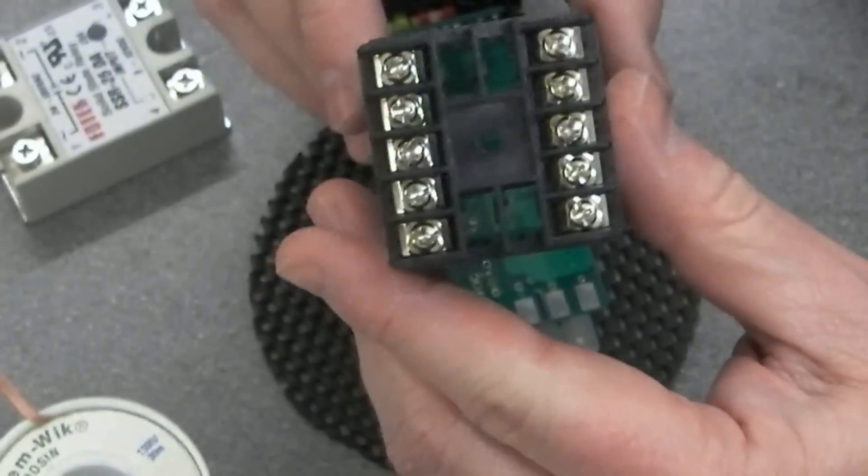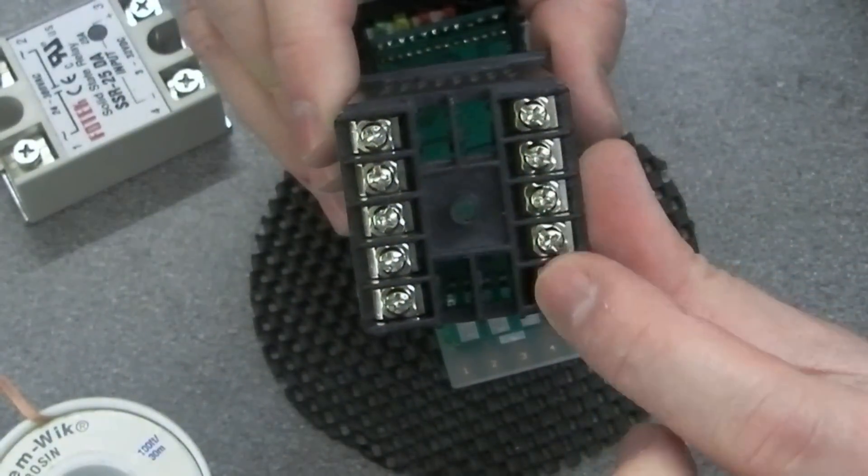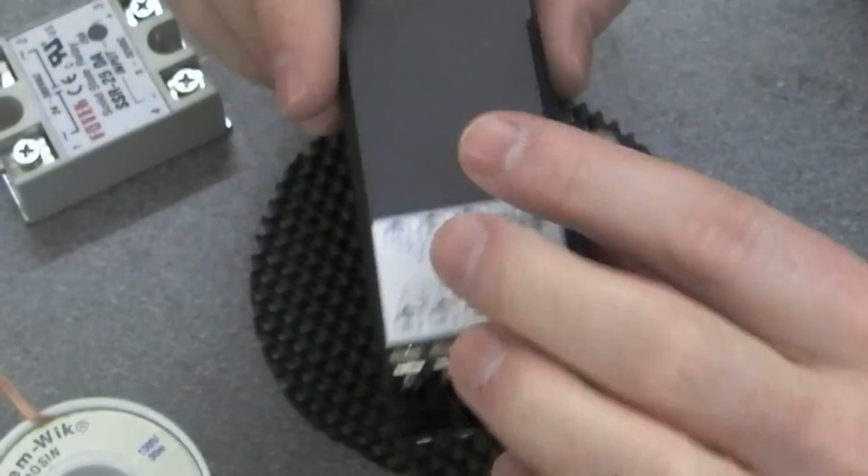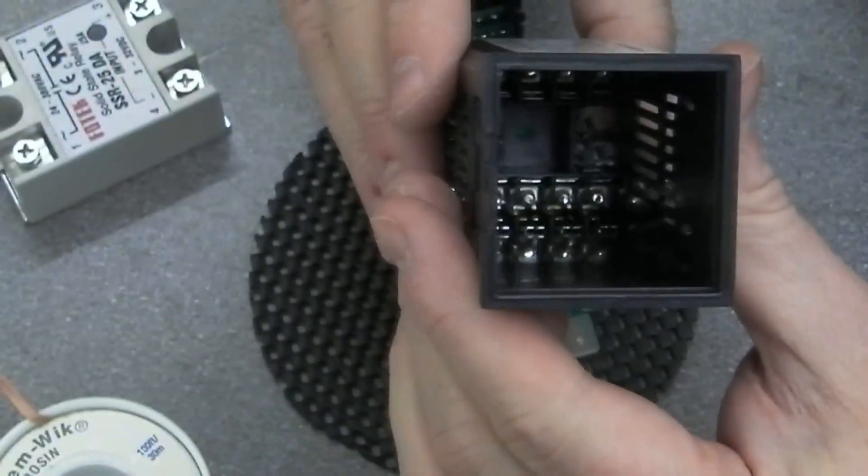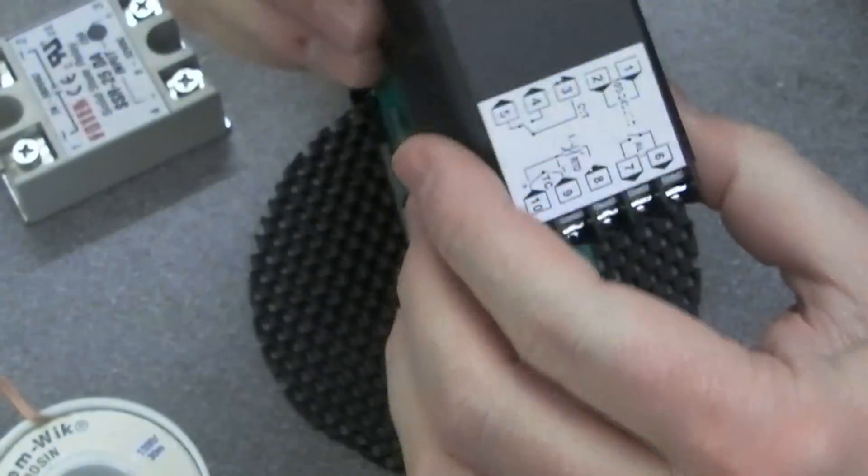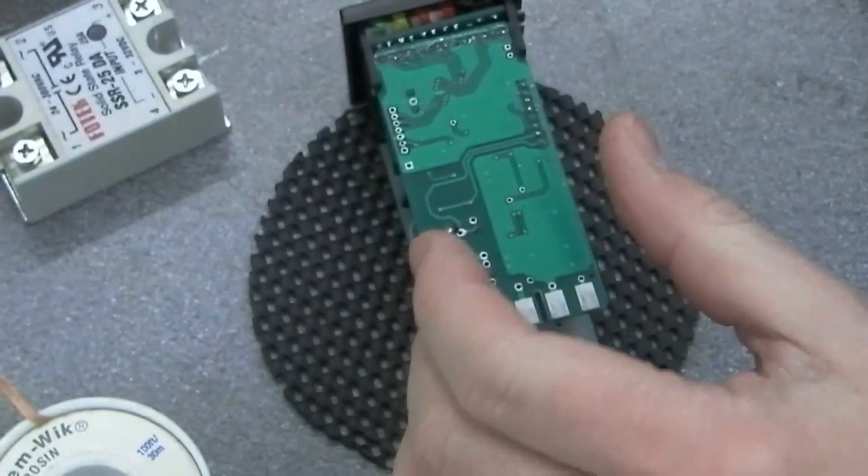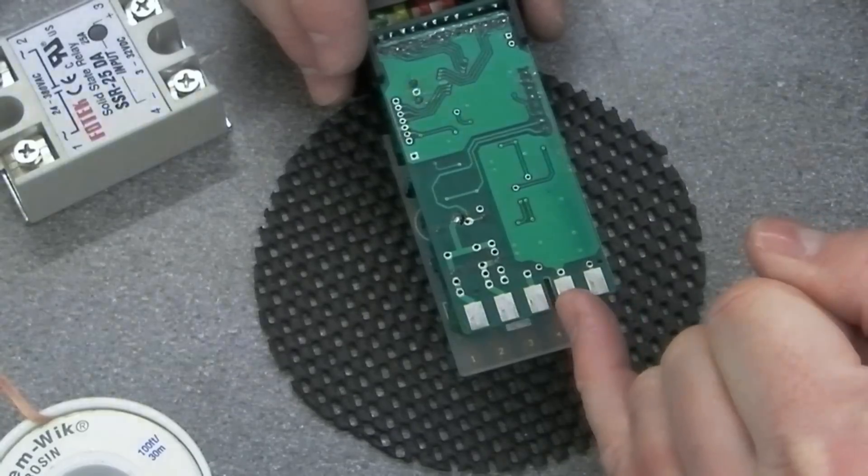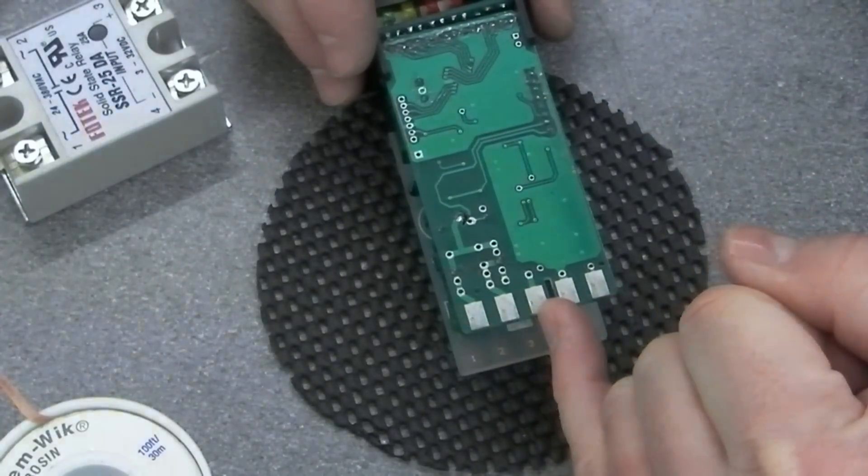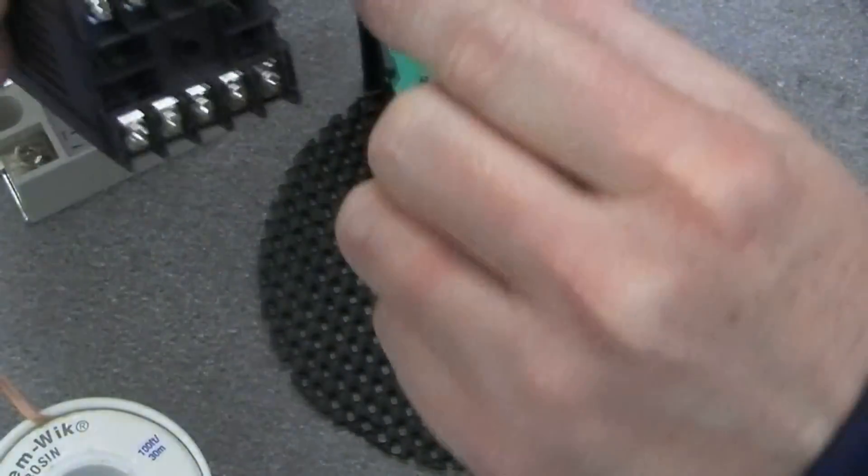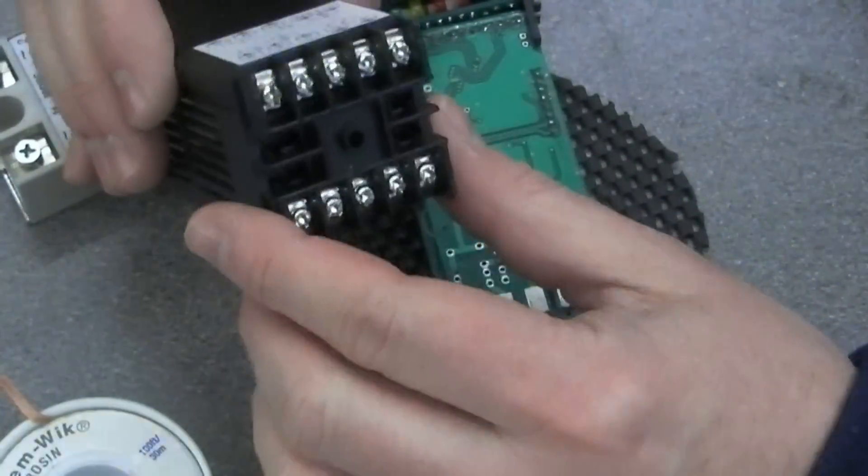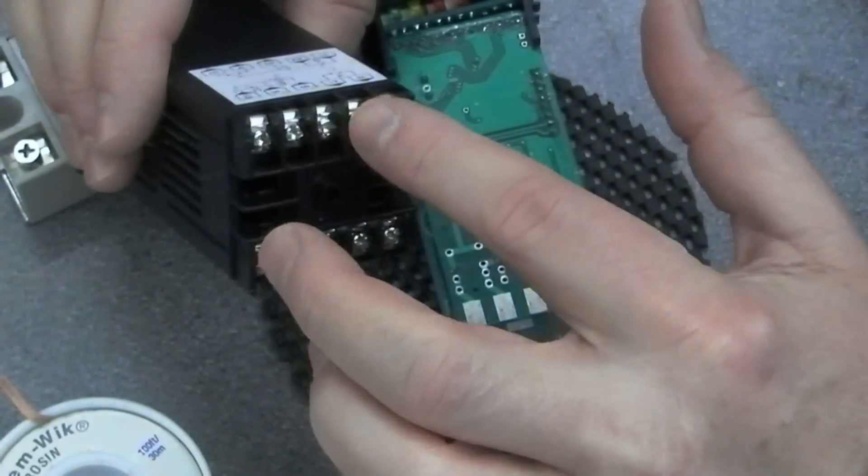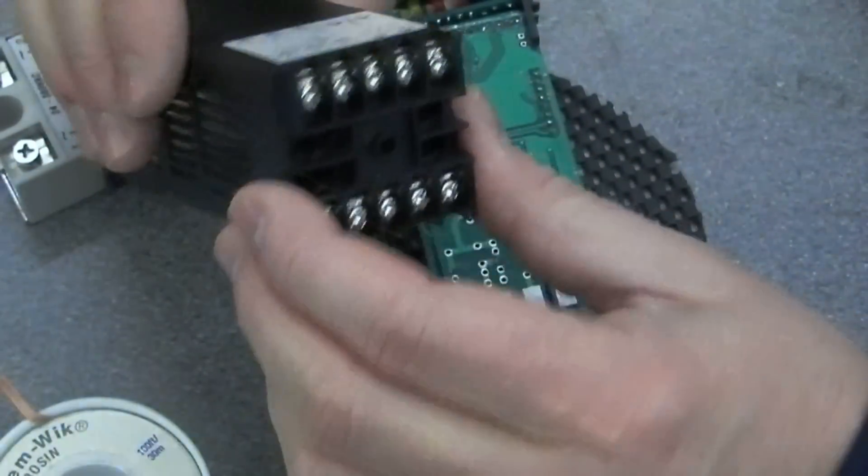So what I'm thinking I might do is actually remove all of these terminals here. I'm going to take all of those out and I think I will solder cables directly to these contacts and then just have them coming out through the case. And when this is all finished I'll probably have these just siliconed in place and sealed up.